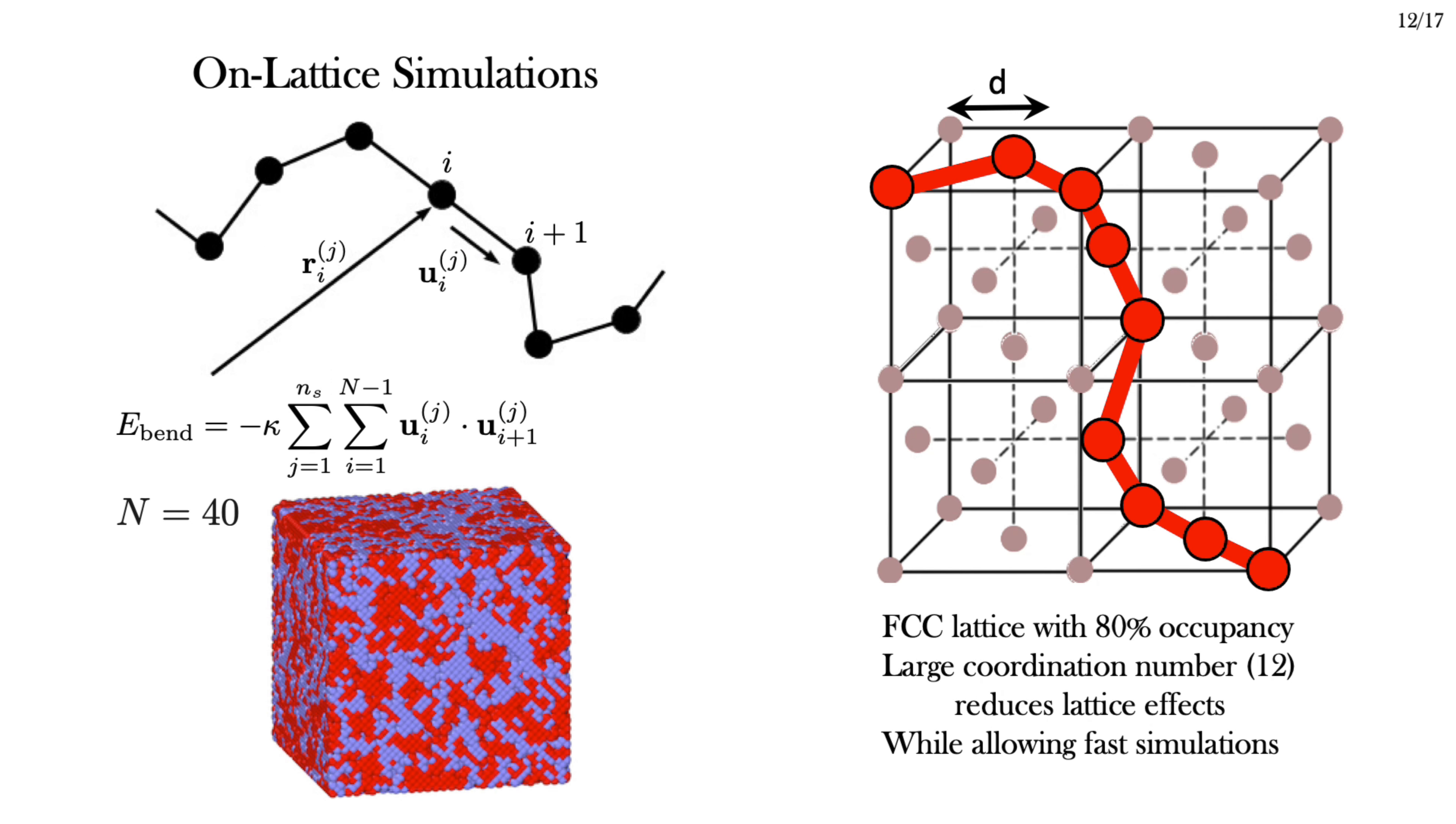A thorough exploration is difficult with our tangent sphere model due to the computational resources required. It's particularly difficult to go to high densities and large bending energies. We therefore turn to a lattice model. We choose an FCC lattice because the large number of nearest neighbors helps reduce the lattice effects, but we can still go to 80% occupancy while still simulating long times. We're also able to explore larger bending energies.